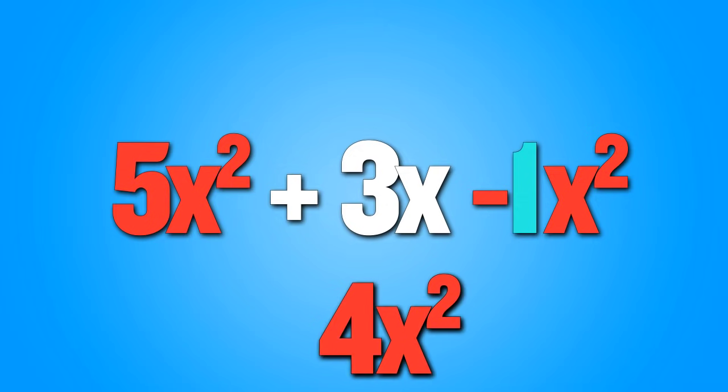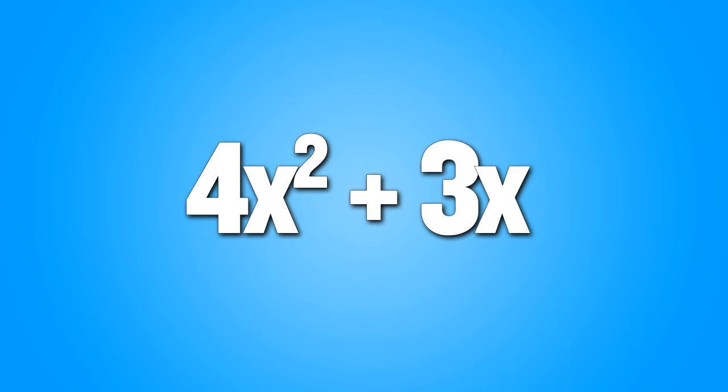We're left with 4x squared plus 3x. That's as far as we can go — we're done. That's combining like terms.